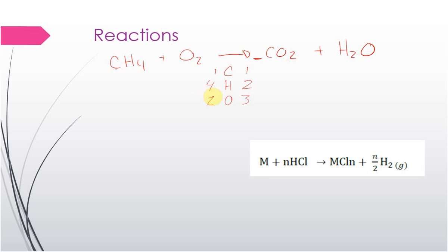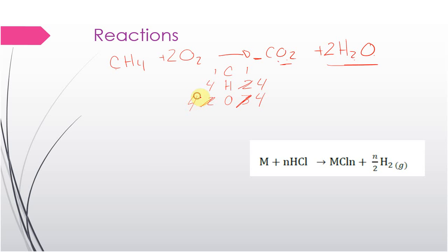What we do is create a balanced equation by adjusting coefficients in front of our compounds. I need four hydrogens, so I add a two in front of water — two times two gives four hydrogens. But now I also have two oxygens from CO2 plus two oxygens from water, giving four oxygens overall. So we add a two in front of oxygen to indicate we've used four oxygens and produced four oxygens, giving us a balanced chemical equation.